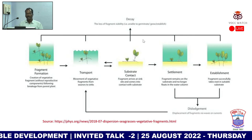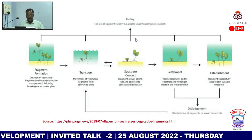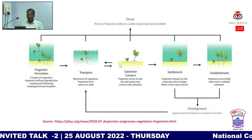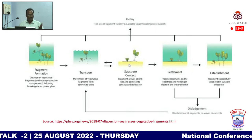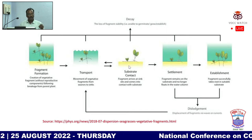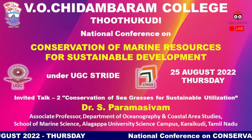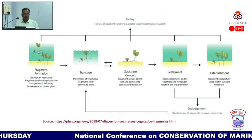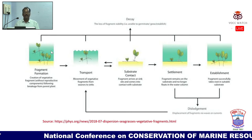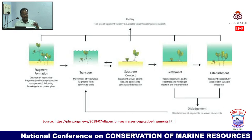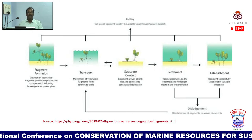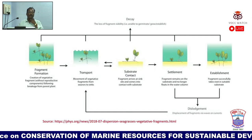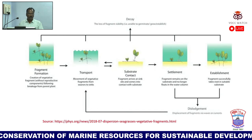Another reproductive method involves fragment dispersal — a fragment is transported to a nearby or distant area, attaches to a suitable sandy substrate, and grows into a separate plant. Similarly, roots extend to nearby areas, similar to how grass spreads on land. Posidonia australis spreads this way over a 180-kilometer radius in Shark Bay, Australia.